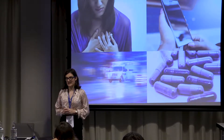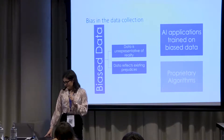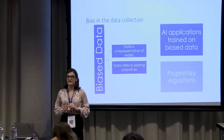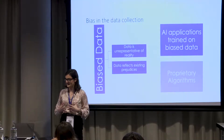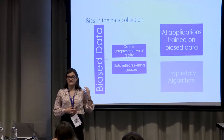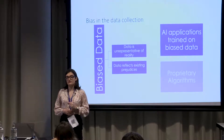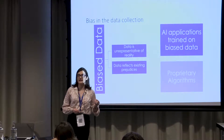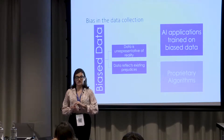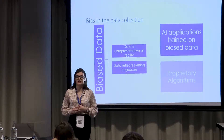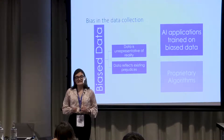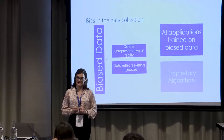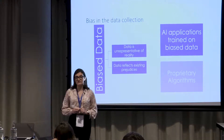Bias can be introduced into data collection in two main ways: either the data is unrepresentative of reality, or the data reflects existing prejudices. We're now seeing AI applications commonly used to conduct job interviews, approve loan applications, aid medical diagnoses, and screen CVs — but these systems may have been trained using datasets riddled with data gaps. And because most AI software is proprietary, we have no way of knowing whether these gaps have been accounted for.